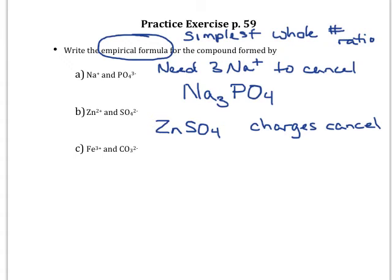So I need two iron ions and three carbonate ions in order for this to cancel. Because if I have two iron ions, that's going to give me a plus six charge, and three of the carbonates gives a minus six charge. So that's the only way it's going to cancel, with two irons and three carbonates.